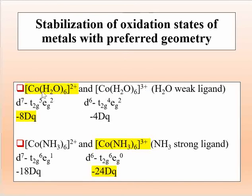So we can say that cobalt in a complex with water is stabilized in the plus 2 oxidation state. Now comparing cobalt complexes in the plus 2 and plus 3 oxidation states with NH₃ type ligand: since NH₃ is a strong field ligand, it will form a low spin complex.